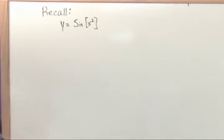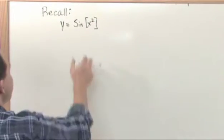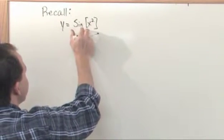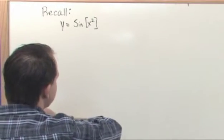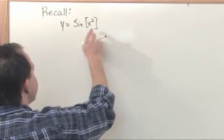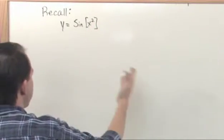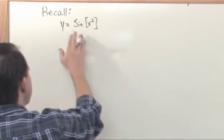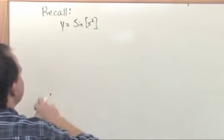You know from instinct now that you need to use the chain rule for this because you know how to take the derivative of sine of x, but you don't have sine of x here. You know how to take the derivative of x squared, but you don't have x squared just by itself, they're nested within one another, so you have to use the chain rule.